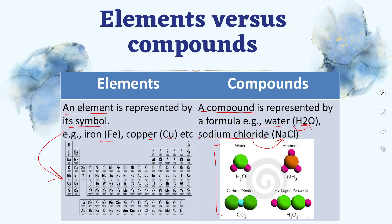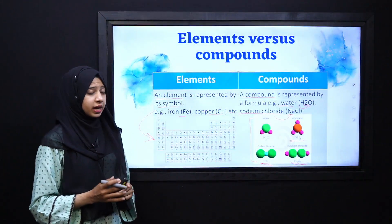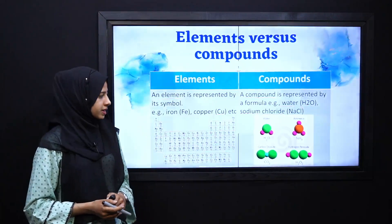Furthermore, humare paas kuch aur examples given hain, that are water ho gaya, ammonia ho gaya, carbon dioxide ho gaya, hydrogen peroxide ho gaya, aur along with these names, the chemical formulas are also written. Toh hum compounds ko chemical formulas ke zariye se represent karte hain.